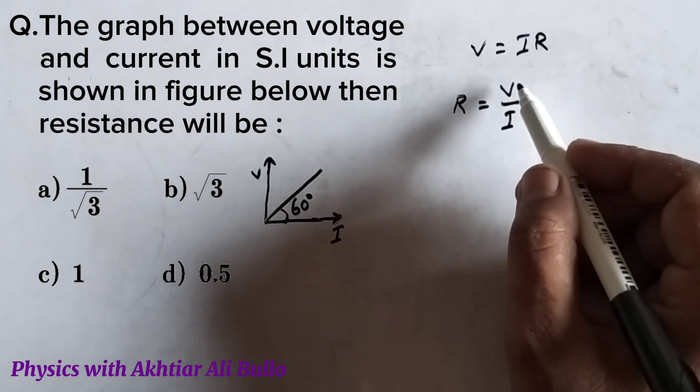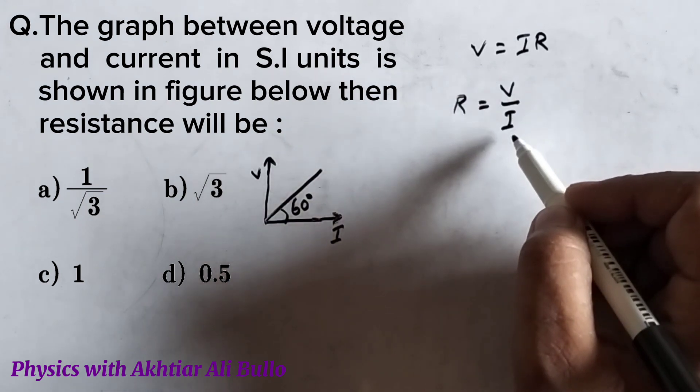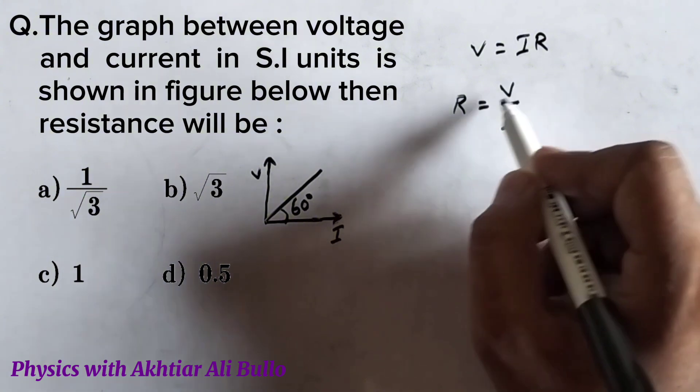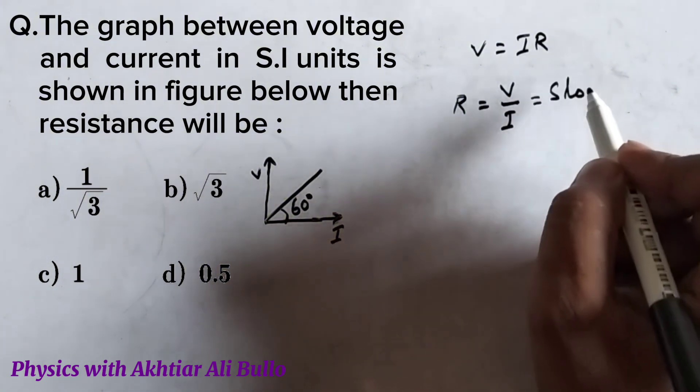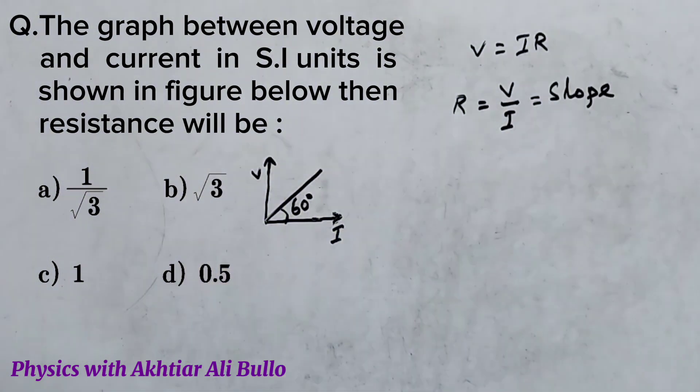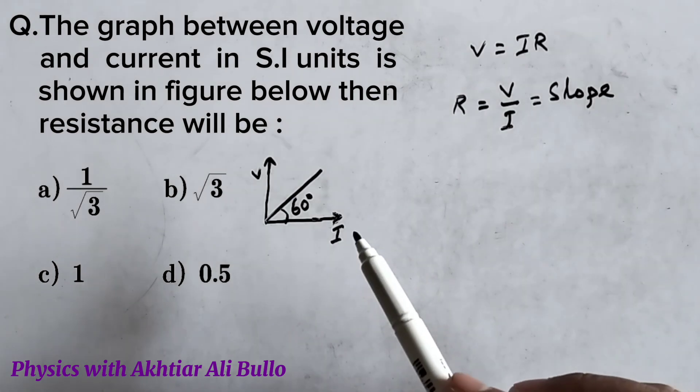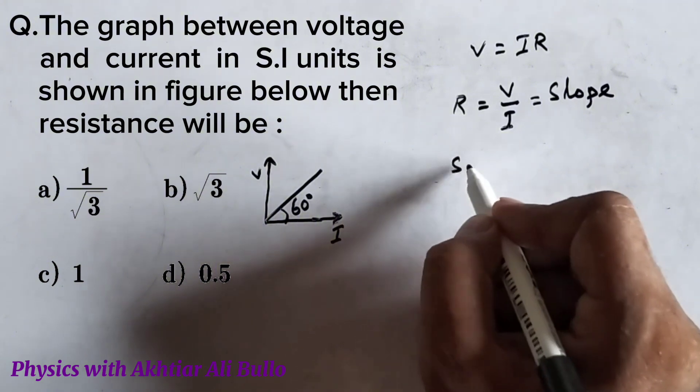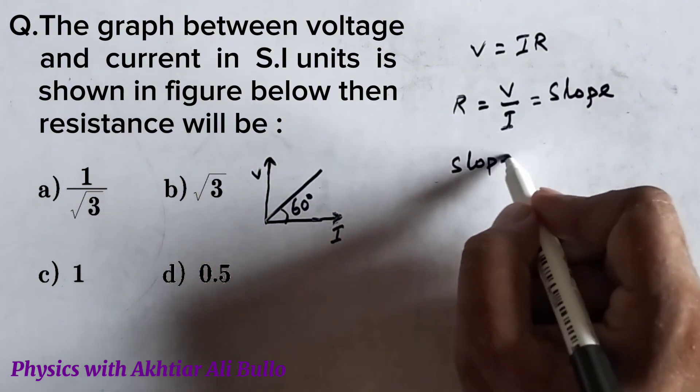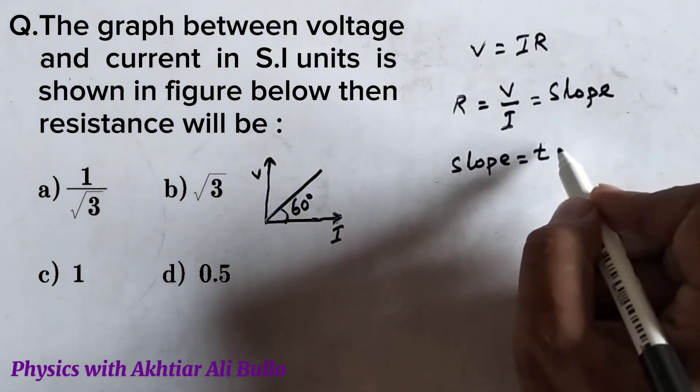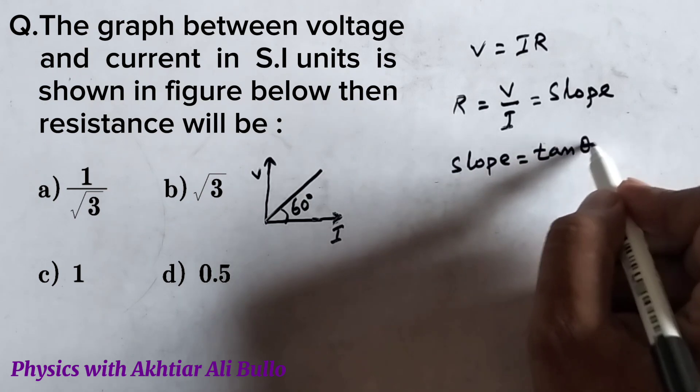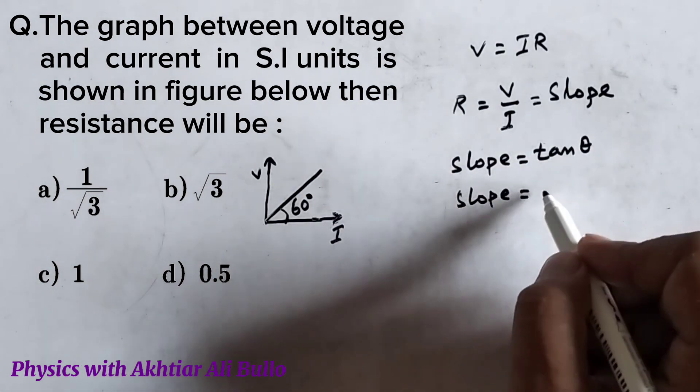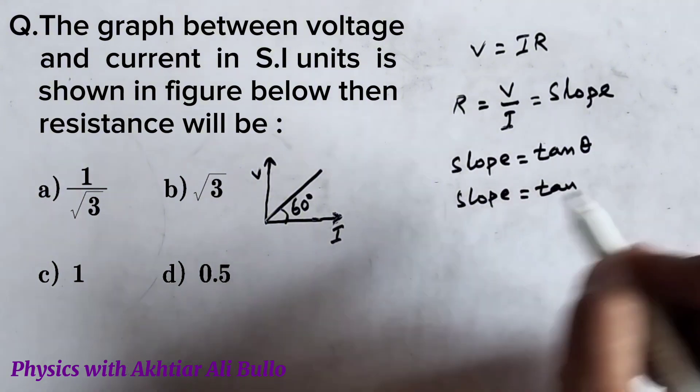This means the slope of voltage and current gives resistance, so it is equal to slope. In this condition we will find the slope by using the formula: slope is equal to tan theta.